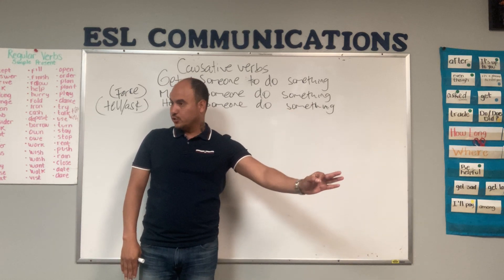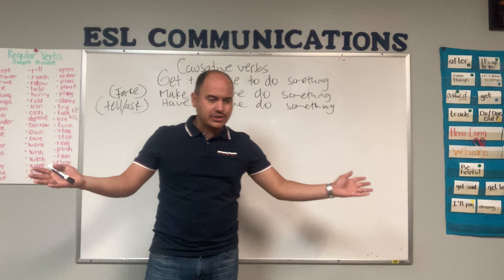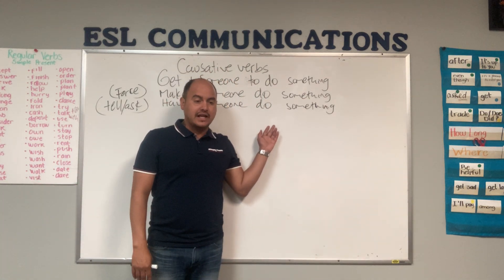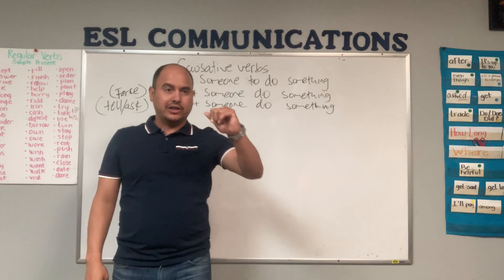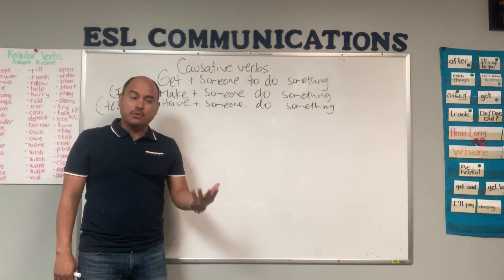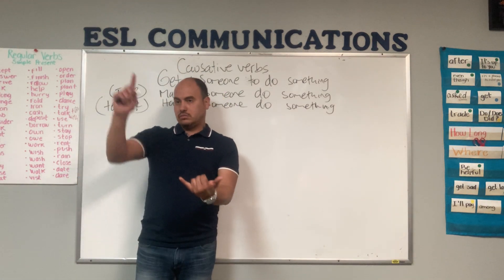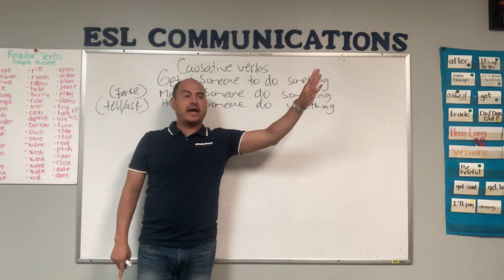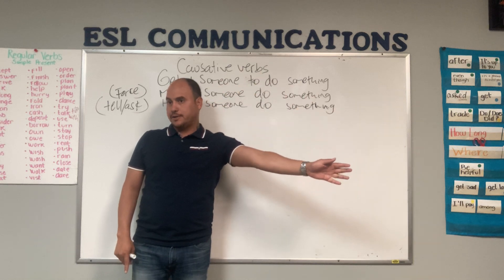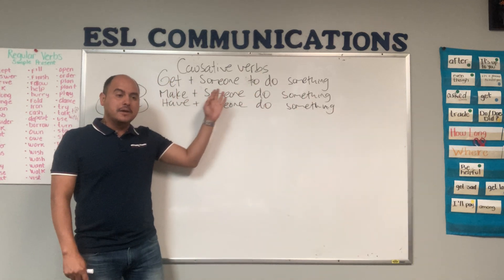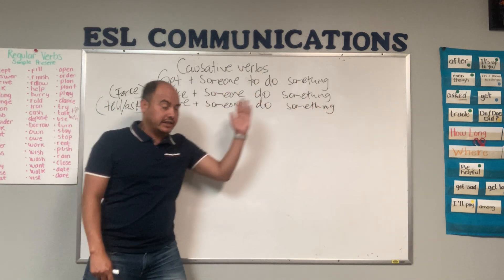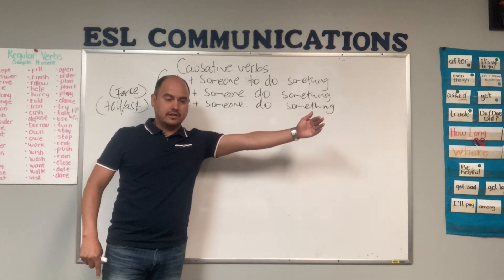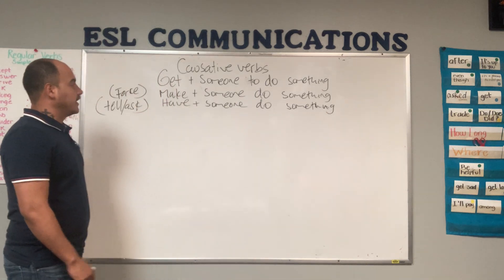Have someone do something. This class is more like high intermediate because you should know conjugations of get: present tense get, past tense got, past participle gotten. Make: past tense made. And have: past tense had.